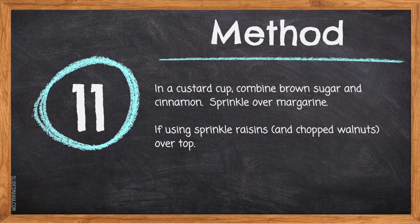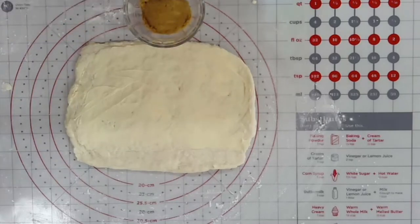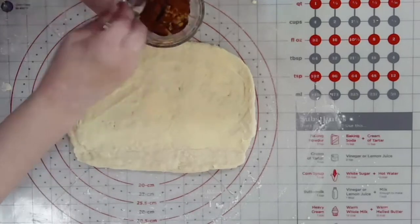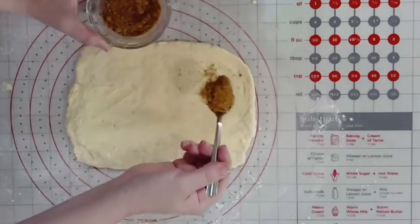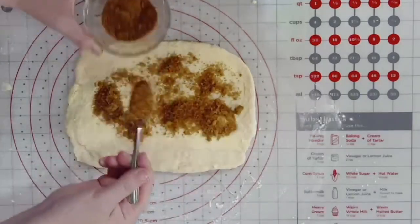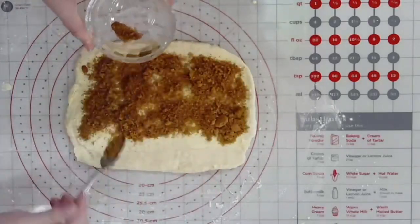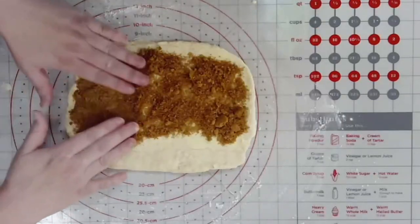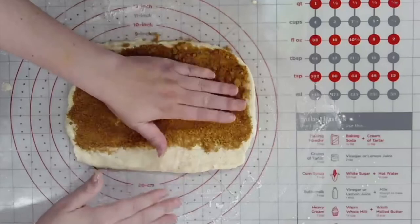Step 11: In a custard cup, combine brown sugar and cinnamon. Sprinkle over the margarine. Pack your brown sugar down in the small measures to remove any air. Add cinnamon and give it a good stir to combine — this ensures the cinnamon is equally distributed throughout. Sprinkle the mixture along the margarine on the dough and use your fingers to pat it in so it sticks and to break up any large chunks.